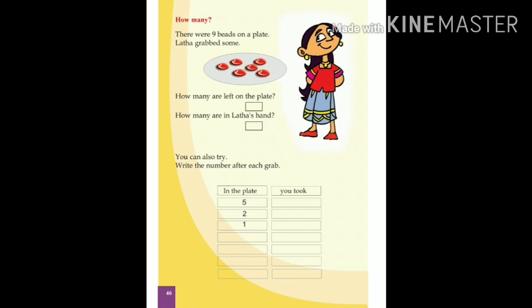How many are in Letha's hand? Let's count: 2, 6, 7, 8, 9. So 9 beads, she took 3. So 3 beads are there in the plate. You want to write 3 in that column.